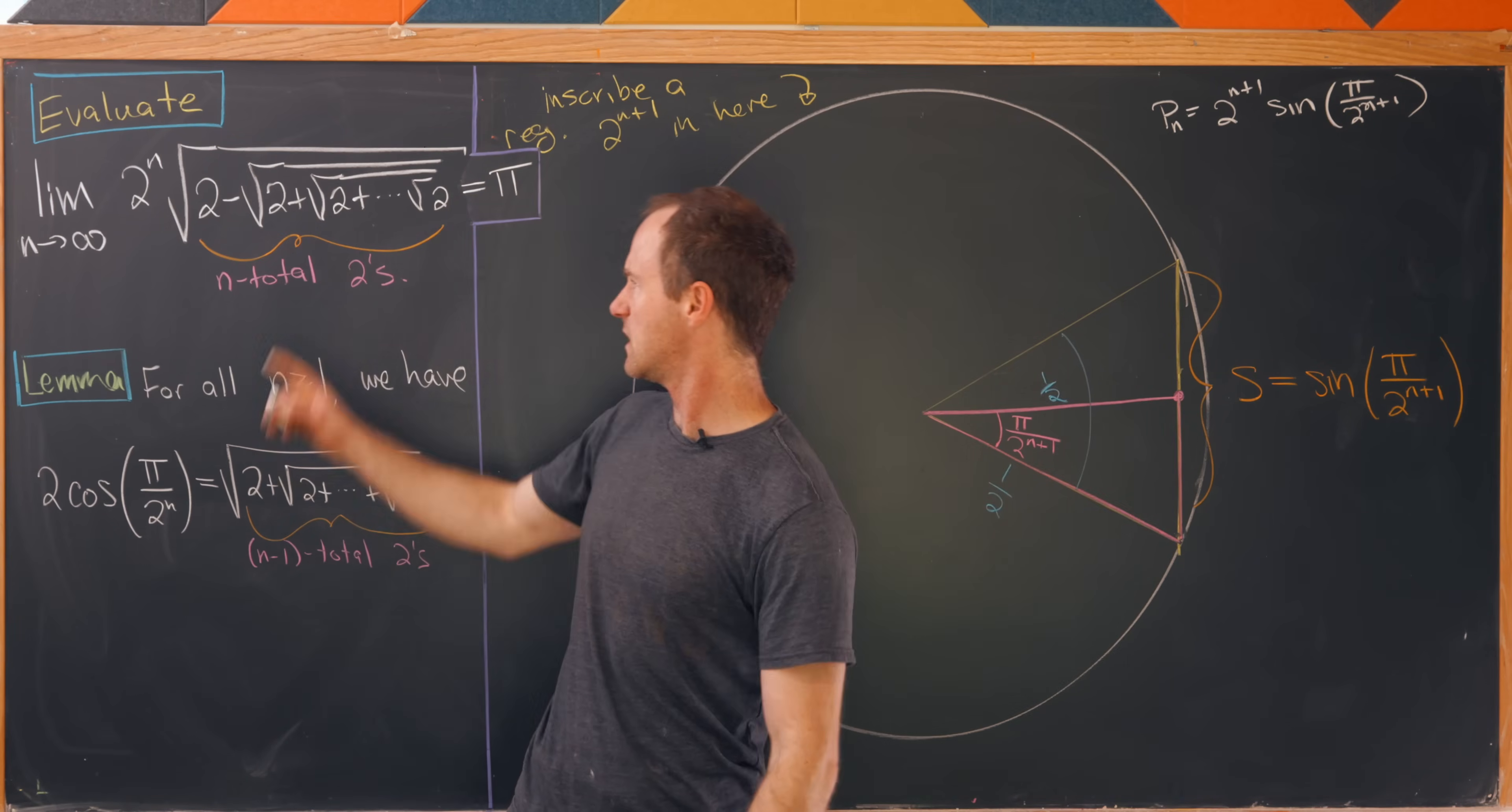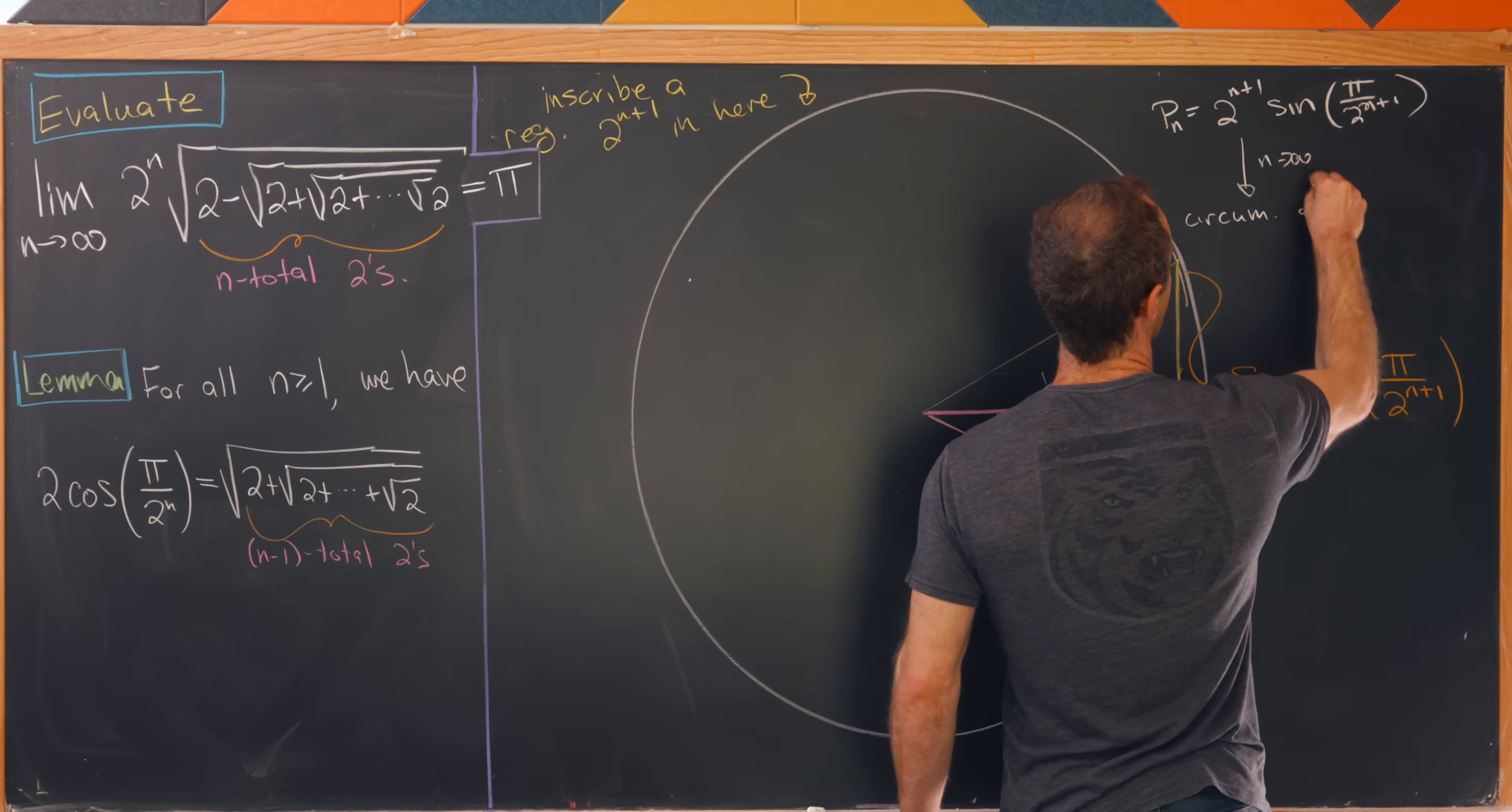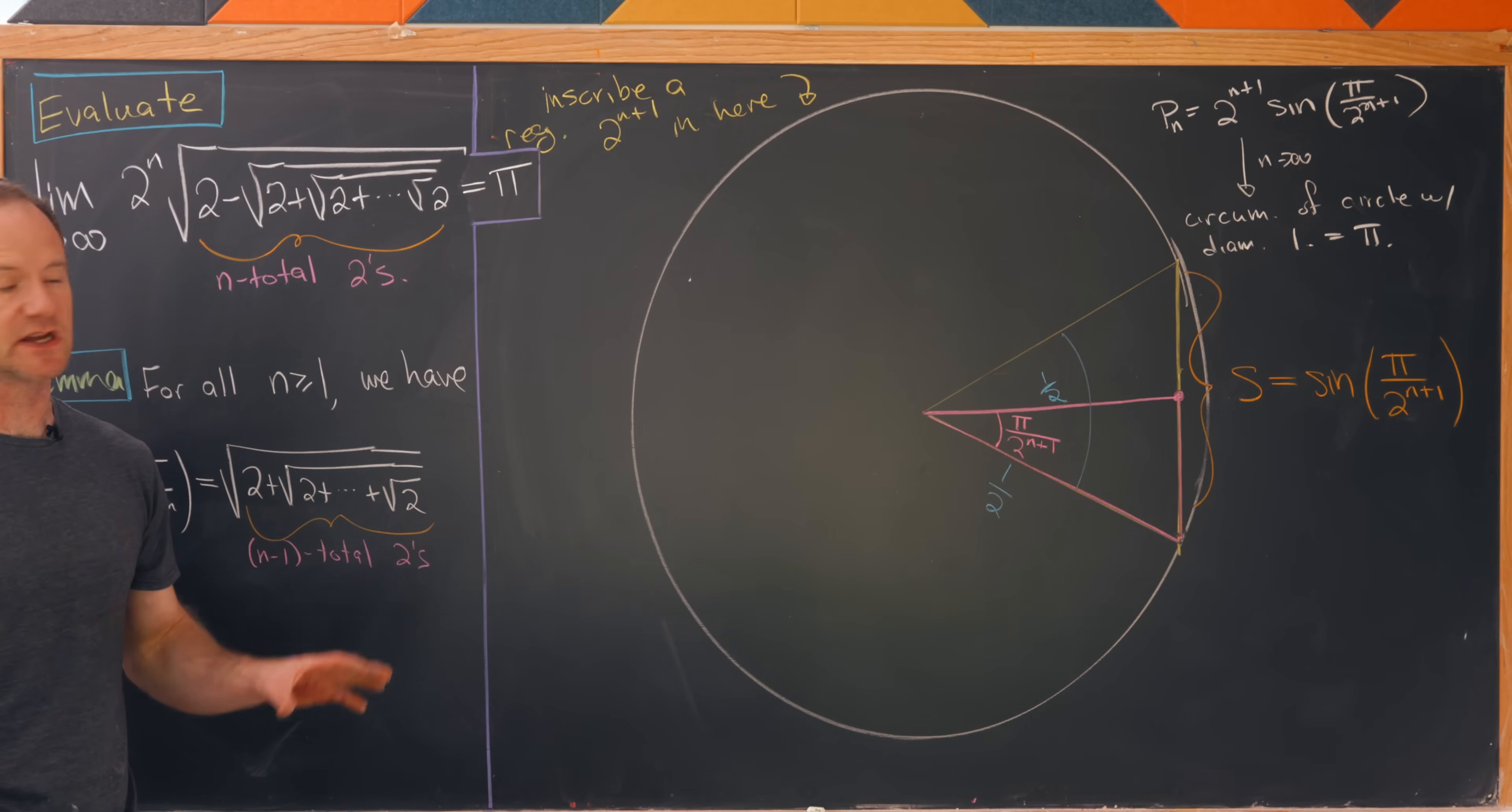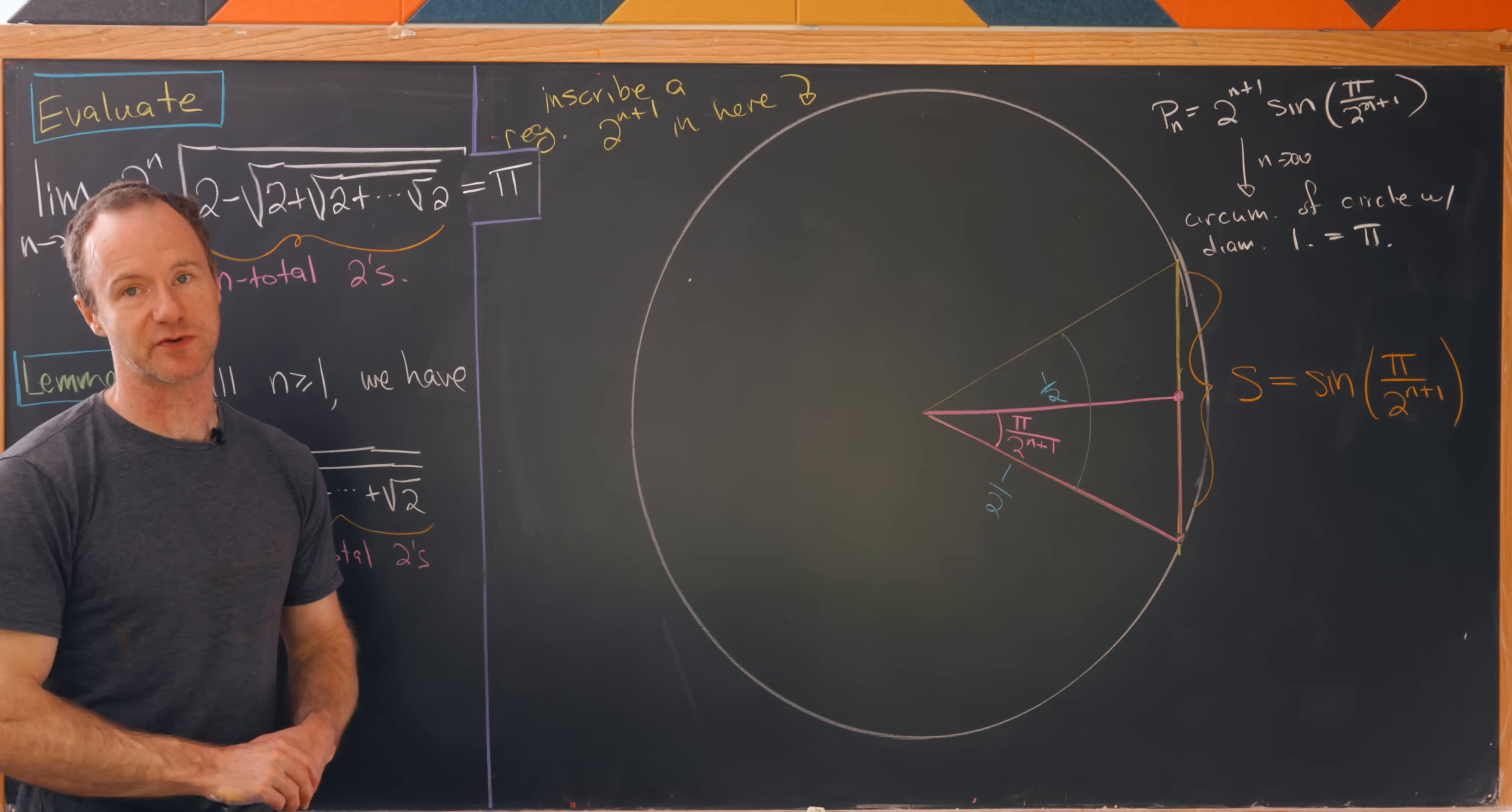But now taking the limit gives us this object, but also taking the limit should give us the circumference of a circle with diameter 2 times 1 half or 1, which is equal to pi. So of course I just sketched that result and some of the underlying calculations you would need to repeat from what we did before. But that gives a nice geometric interpretation of what we just saw. And that's a good place to stop.